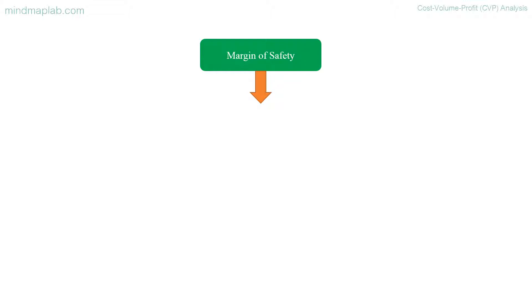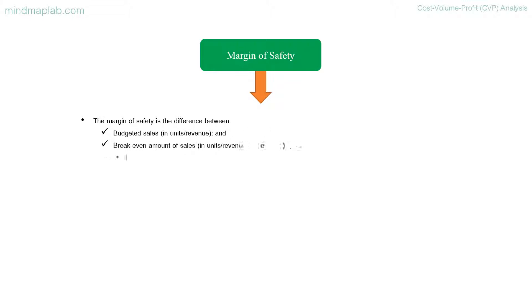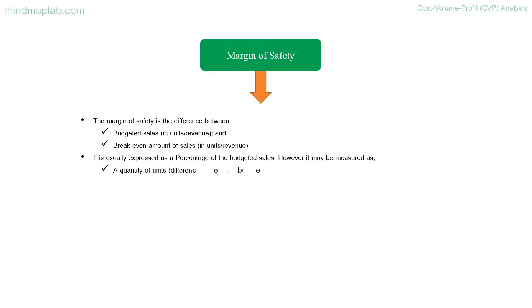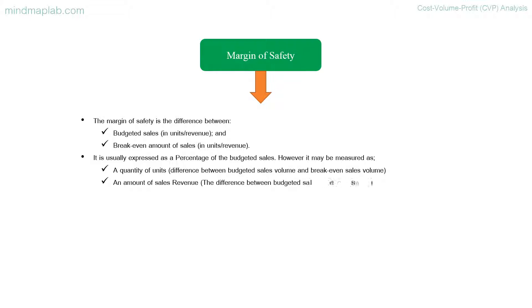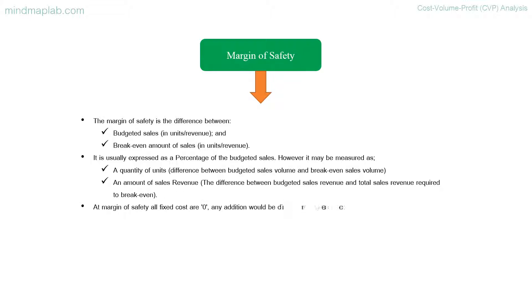The margin of safety is the difference between budgeted sales (in units or revenue) and the break-even amount of sales (in units or revenue). It is usually expressed as a percentage of budgeted sales, but may also be measured as a quantity of units — the difference between budgeted sales volume and break-even sales volume — or as an amount of sales revenue, the difference between budgeted sales revenue and the total sales revenue required to break-even.